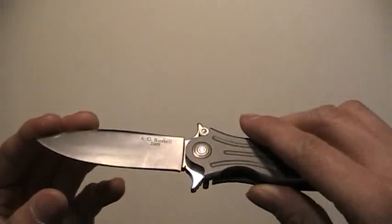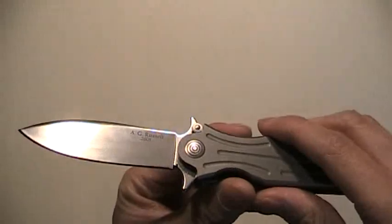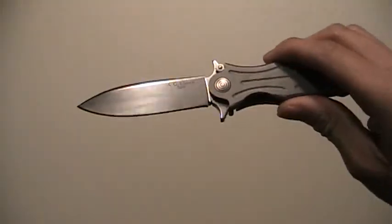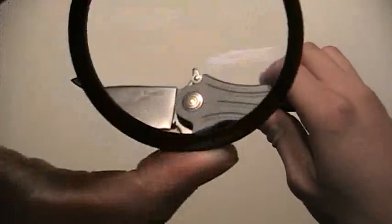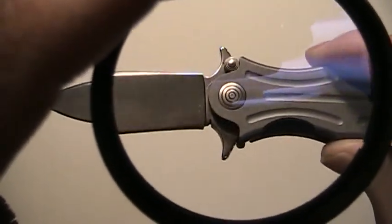Now, what makes this the Seconds line is that they put a small notch, I believe, on the ricasso. Let me see if I can show that to you here. Bring it up close here. See that little notch down there on the corner?